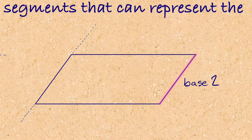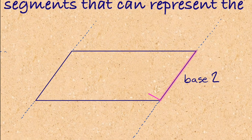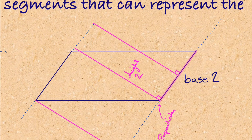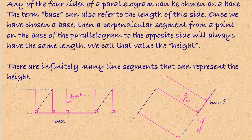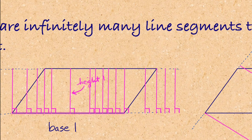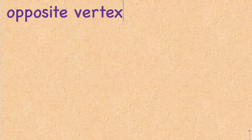In this second parallelogram, let's pick a different base — the one on its side. We extend those base lines out, and notice the height extends to the opposite side, going into the dotted-line area beyond the actual shape. We still need a right angle from the base — a perpendicular line from the base to the opposite side. There are infinitely many such line segments, as you can see.